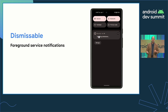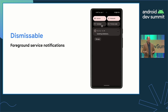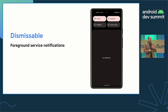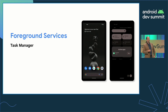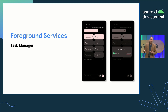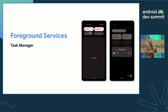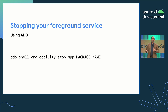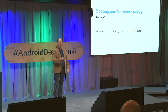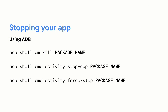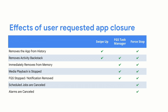Users told us they really wanted foreground service notifications to be dismissible, so we added that. To provide more clarity around what apps are doing in the background, we created the foreground services task manager. If your app is using a foreground service, it gets included in this new interface that allows the user to end the foreground service, which also closes your app. You can use ADB for testing to stop your app exactly the way the FGS task manager does using the stop app command. This is similar to the force stop command from the app info page or the force stop ADB shell interface, but unlike force stop, it doesn't remove the app from history and doesn't cancel scheduled jobs and alarms — so it has less long-term impact.